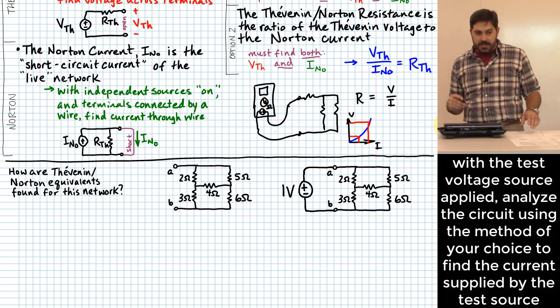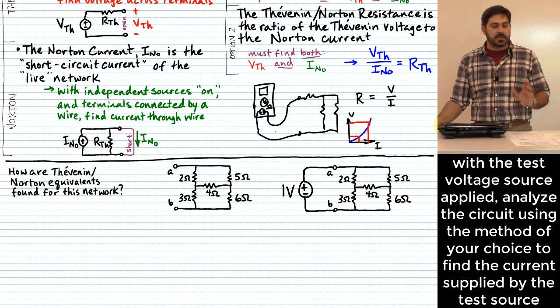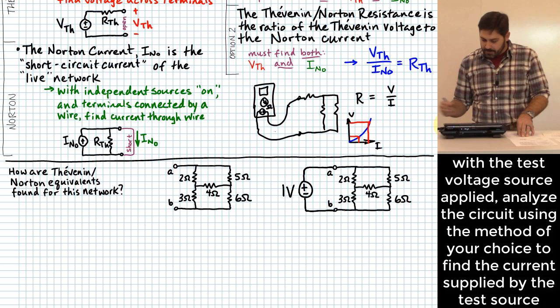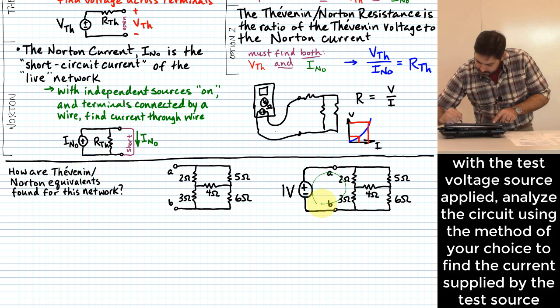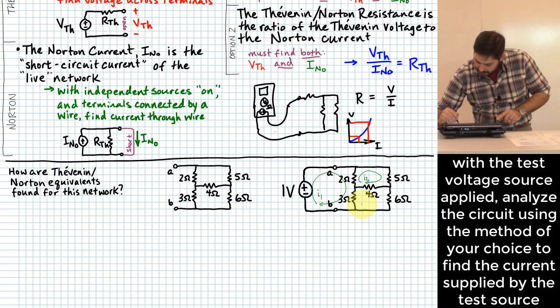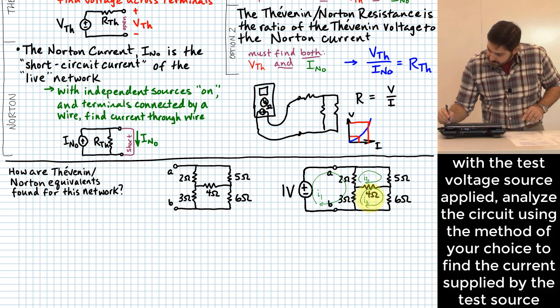Looking at this circuit, mesh analysis is one of the easiest ways to deal with a circuit that has more than one loop. So I'll identify my meshes: mesh current I1 in the first loop, I2 in the second loop, and I3 in the third loop.